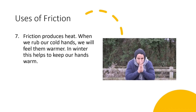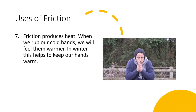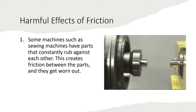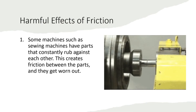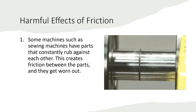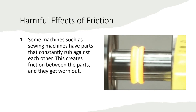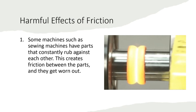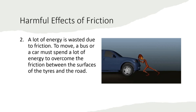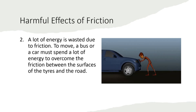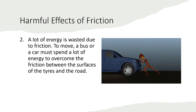So we saw that friction is necessary, but too much friction is not good either. Let us now look at some harmful effects of friction. Some machines, such as sieving machines, have parts that constantly rub against each other. This creates friction between the parts and they get worn out. A lot of energy is wasted due to friction. A bus or a car must spend a lot of energy to overcome the friction between the surfaces of the tires and the road.